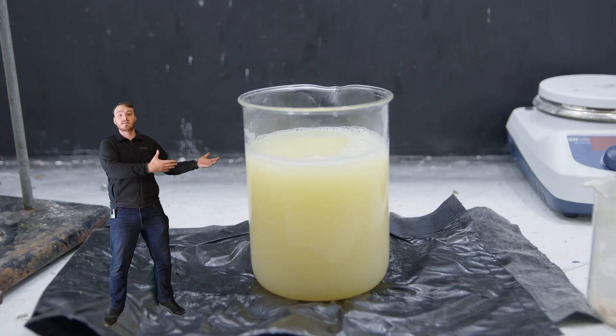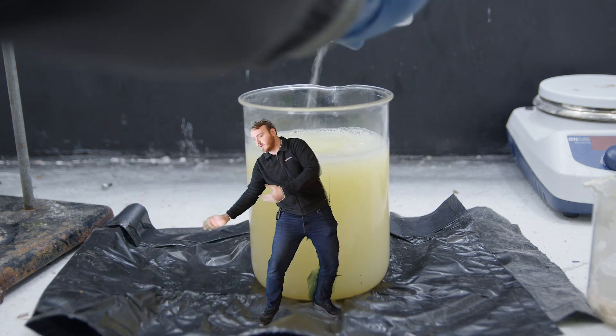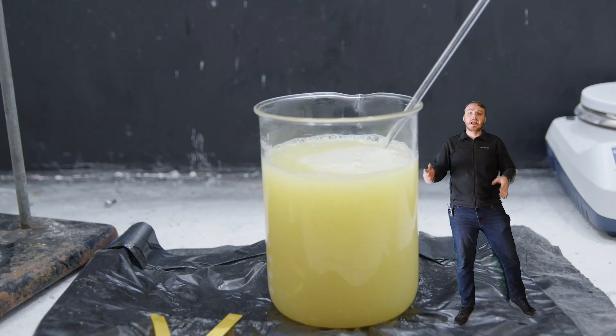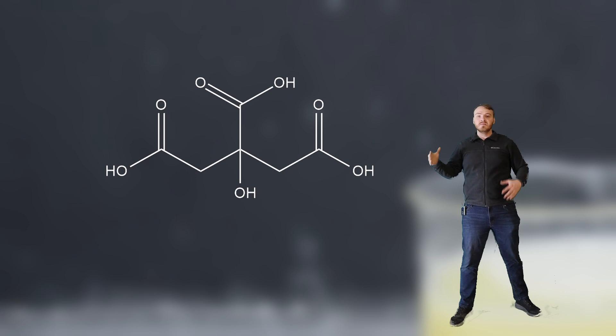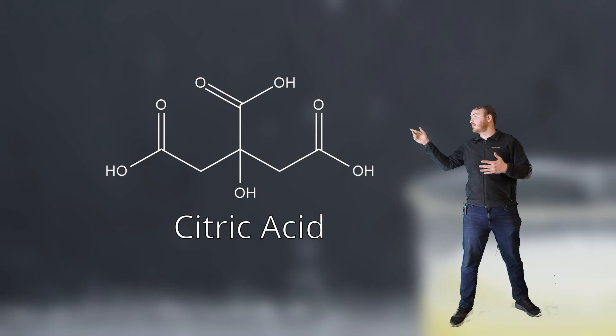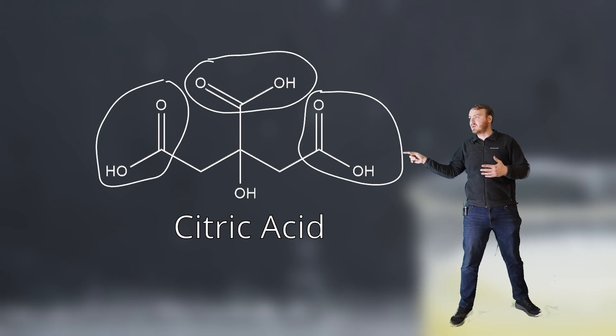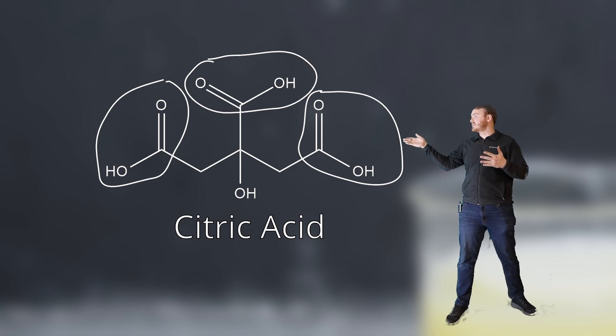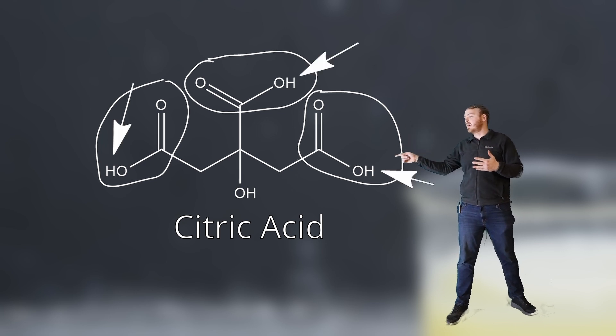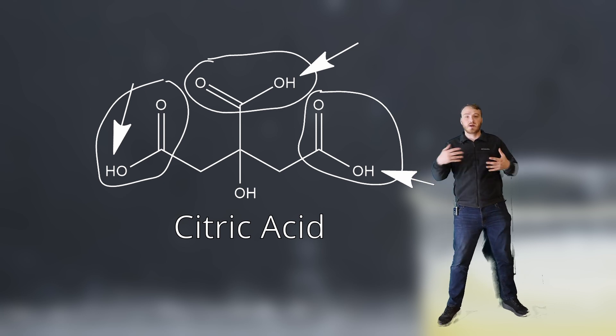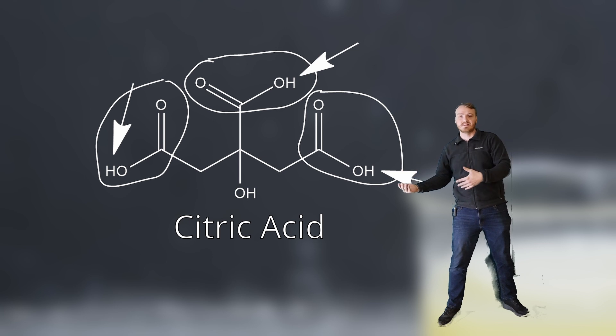First thing we're going to do is take some sodium hydroxide and throw it into the lemon juice. Let me explain why. This is citric acid. It's got three of these carboxylic acid groups. Each of these little groups has hydrogens on them that are really prone to popping off. These hydrogens that really want to come off make it an acid. That's where the term citric acid comes from.